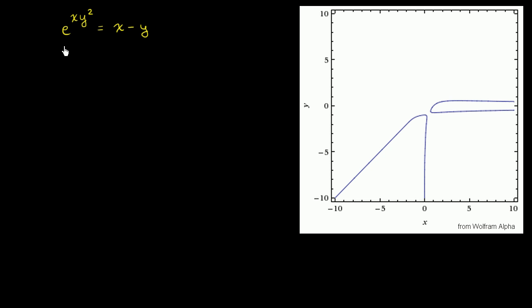Let's take another implicit derivative of this somewhat crazy relationship. I've graphed the relationship here. As you can see, it is actually quite bizarre. e to the x times y squared is equal to x minus y. This is, at least in the range that's depicted here, the x's and y's that satisfy this relationship.